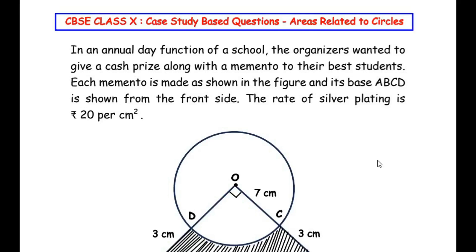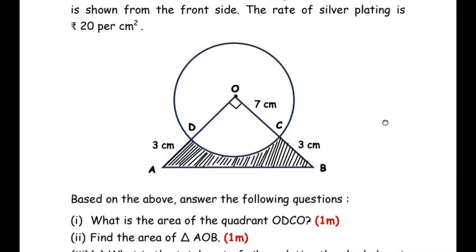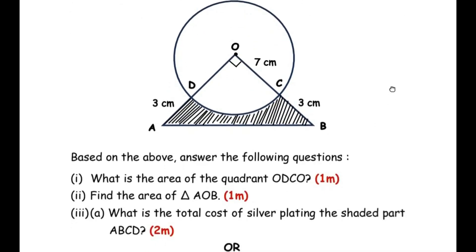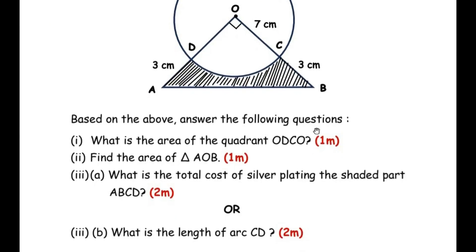Hello and welcome to my channel. In this video we are going to solve a case study based question from the areas related to circles chapter. This question has three sub questions: the first sub question is for one mark, the second sub question is for one mark, and the third sub question is for two marks. There is also an OR question, so you can attempt either the A question or the B question.